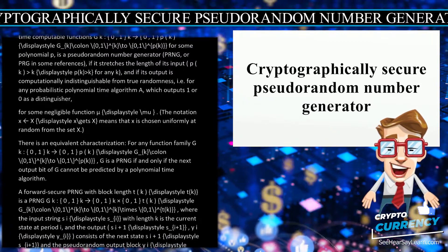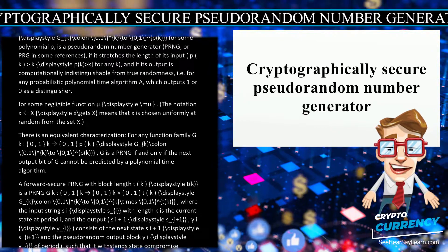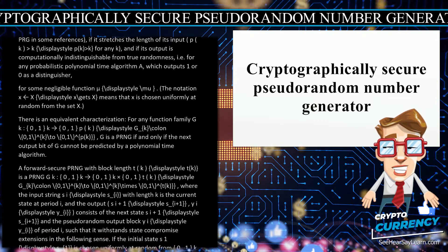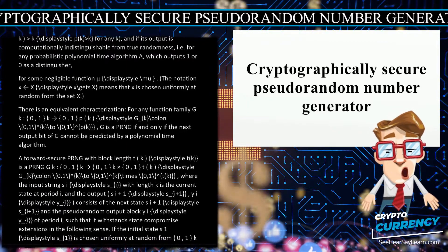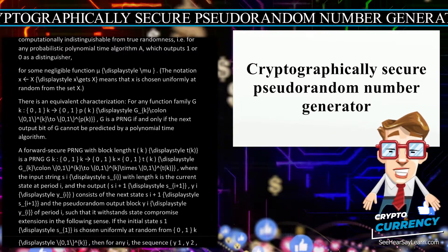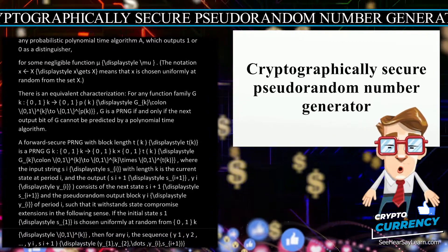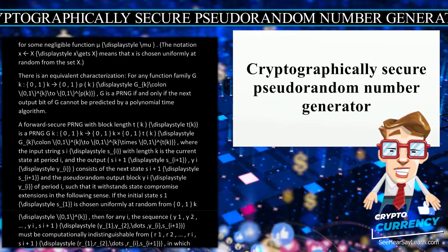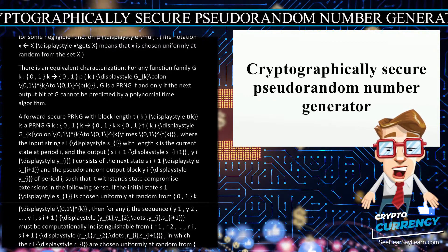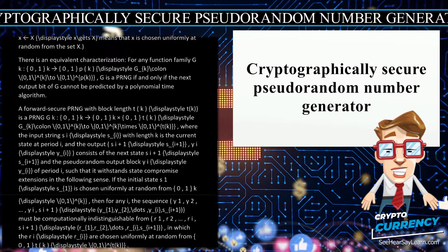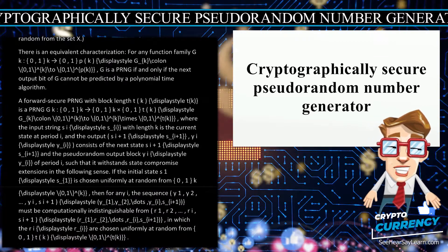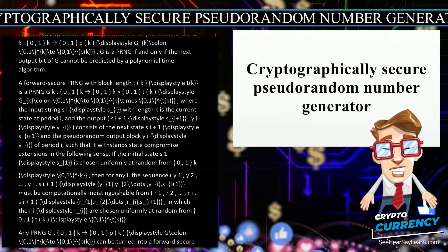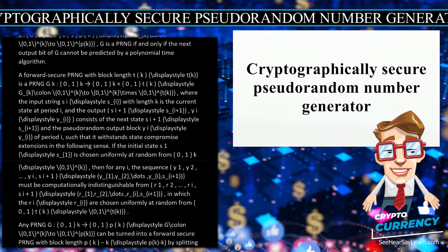A forward-secure PRNG with block length T(K) is a PRNG G_K: {0,1}^K → {0,1}^K × {0,1}^T(K) where the input string S_I of length K is the current state at period I, and the output (S_{I+1}, Y_I) consists of the next state S_{I+1} and the pseudo-random output block Y_I of period I, such that it withstands state compromise extensions. If the initial state S_1 is chosen uniformly at random from {0,1}^K, then for any I, the sequence (Y_1, Y_2, ..., Y_I, S_{I+1}) must be computationally indistinguishable from (R_1, R_2, ..., R_I, S_{I+1}), where the R_I are chosen uniformly at random from {0,1}^T(K).